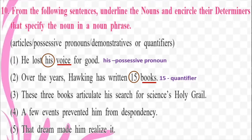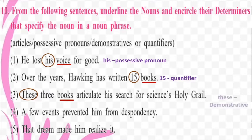Third one: 'These three books articulate his search for science's holy grail.' We pick up the noun 'books' again. And we have 'these three books' — so 'these' here qualifies as the determiner, and this is a demonstrative. Note that 'three' can also qualify as a determiner, but since we have already done quantifiers with '15 books', we focus on 'these' — demonstrating which books: these books.